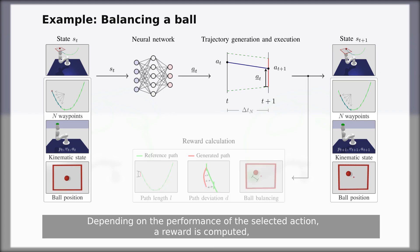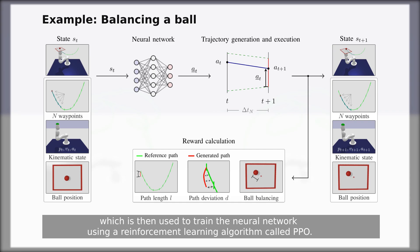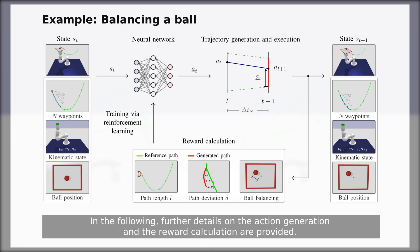Depending on the performance of the selected action, a reward is computed which is then used to train the neural network using a reinforcement learning algorithm called PPO. In the following, further details on the action generation and the reward calculation are provided.